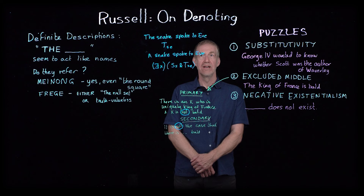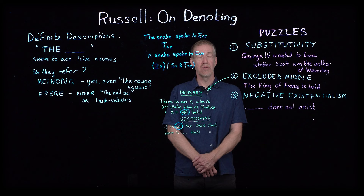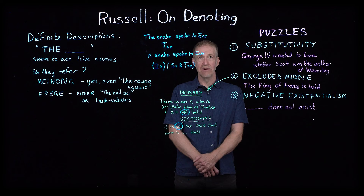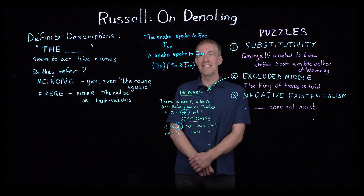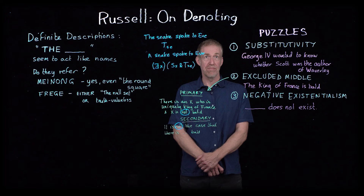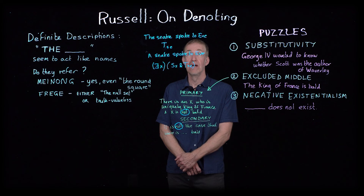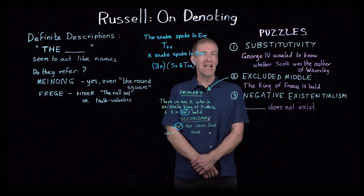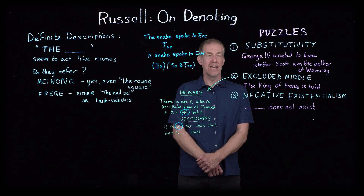We're now going to look at a classic article by Bertrand Russell, perhaps the most important British philosopher of the early 20th century, and one of the founders of analytic philosophy. In this article from 1905, he gives his theory of descriptions — specifically definite descriptions — and this theory of descriptions is regarded as a classic piece of analytic philosophy, in that it very cleverly appears to find a solution for problems that are plaguing a particular project.